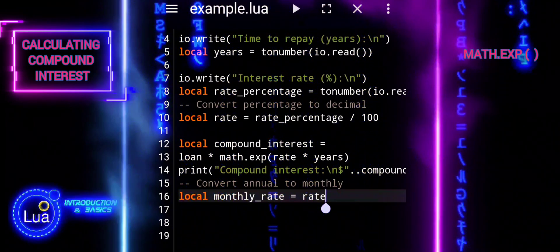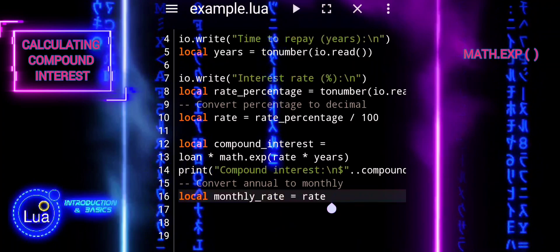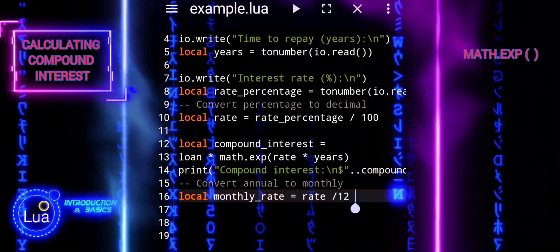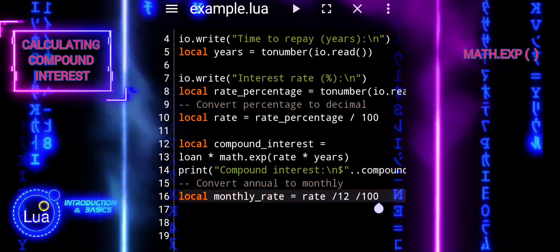This line calculates the monthly interest rate by dividing the annual interest rate by 12 to convert to monthly and then by 100 to convert from percentage to decimal.